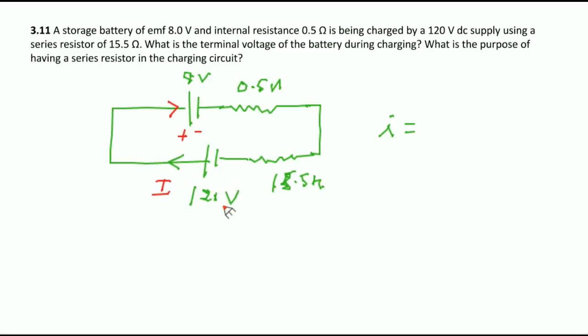How to take net potential difference here: 120 and this is 8, so 120 minus 8 net EMF divided by total resistance 15.5 plus 0.5. This will be 112 and this is 16, so this will be 7 ampere.